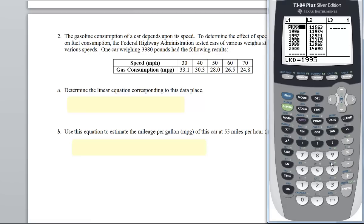I'm going to go ahead and find it, but you've got to pause me. I need to use edit. Let me go up to column heading, hit clear, enter. My X values are going to be speed. My Y values are gas consumption. So I've got 30, 40, 50, 60, 70, 33.1, 30.3, 28.0, 26.5, 24.8. And double check your values, 30, 40, 50, 60, 70, 38.1, 30.3, 28.0, 26.5, 24.8.